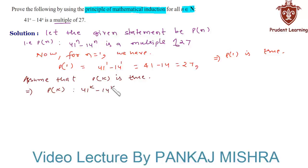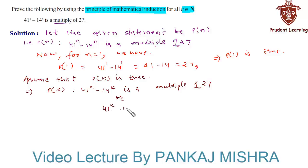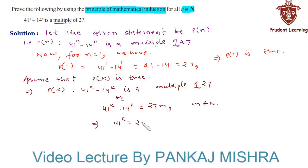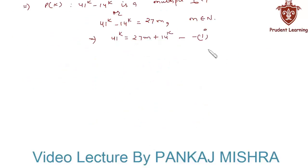Assume that P(k) is true for some positive integer k, that is we have P(k) such that 41 raised to k minus 14 raised to k is a multiple of 27, or we can write this as 41 raised to k minus 14 raised to k equals 27m, where m belongs to natural numbers. Rearranging this equation we have 41 raised to k equals 27m plus 14 raised to k — call it equation 1.